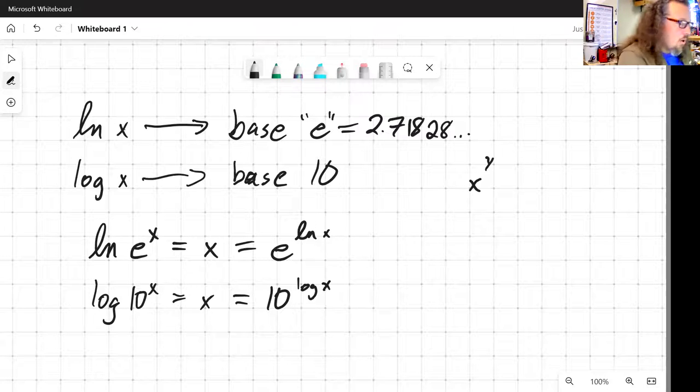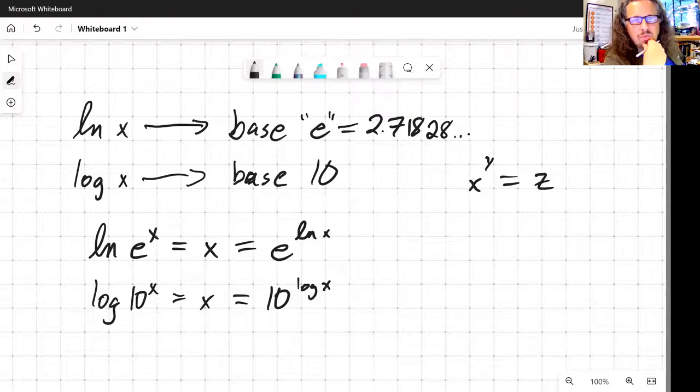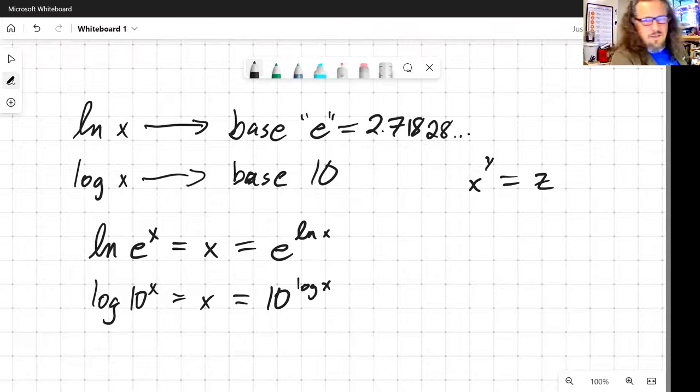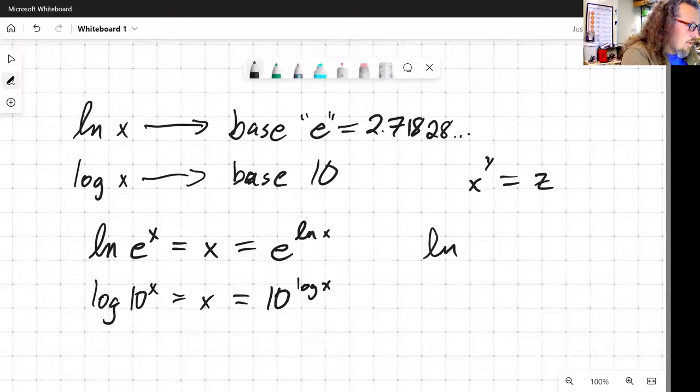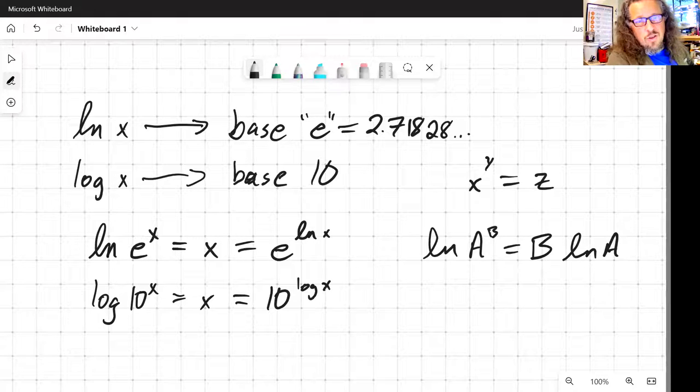For example, if I've got x raised to the y power is equal to z, how do I figure out that y? How do I get that y out of the exponent? There are ways to do it, but some of the ways to do it can get a little cumbersome. But here we've got a log relationship that will help us take care of that. I'll use natural log just because it's easier for me to write.